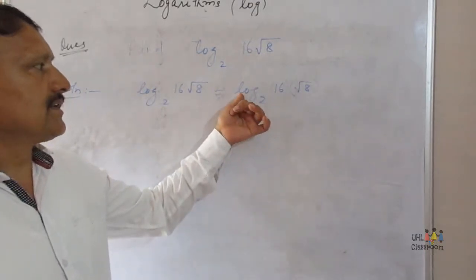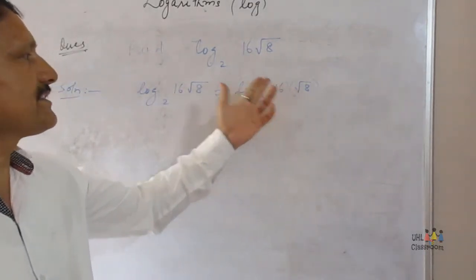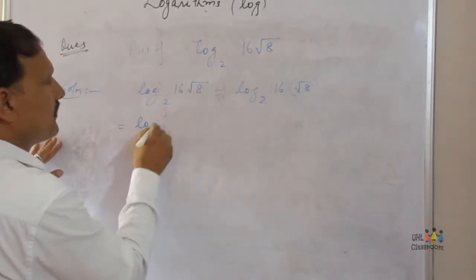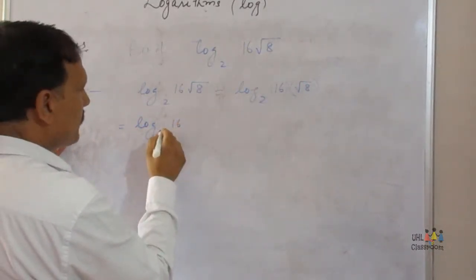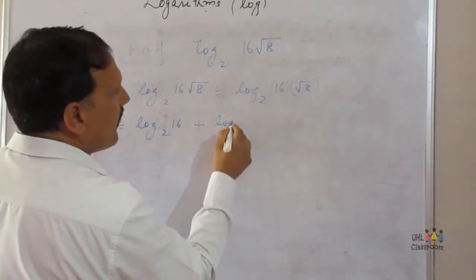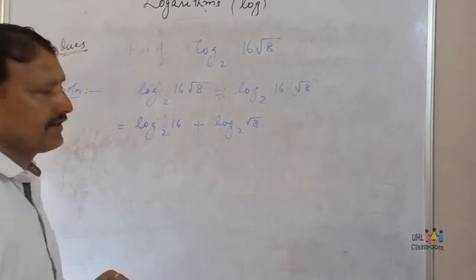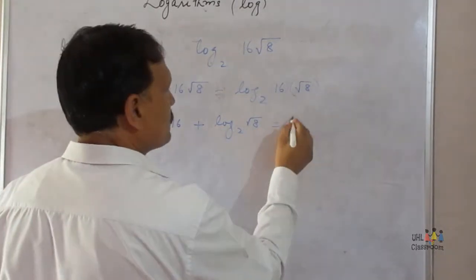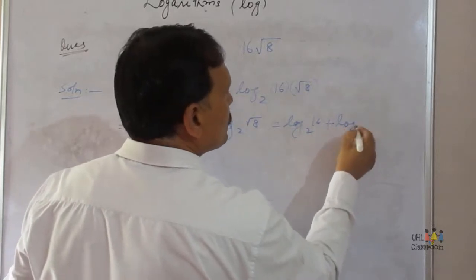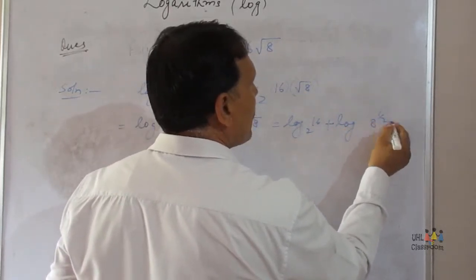This uses the first law of logarithms: log of m into n equals log of m to the base a plus log of n to the base a. That gives us log of 16 to the base 2 plus log of square root of 8, written as 8 raised to the power 1/2, to the base 2.